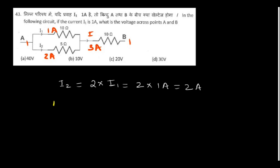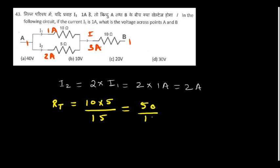The equivalent resistance RT equals R1 multiplied by R2 divided by R1 plus R2, which is 10 × 5 / (10 + 5) = 50/15, giving us 3.3 ohms.